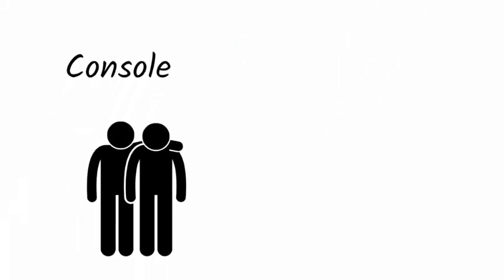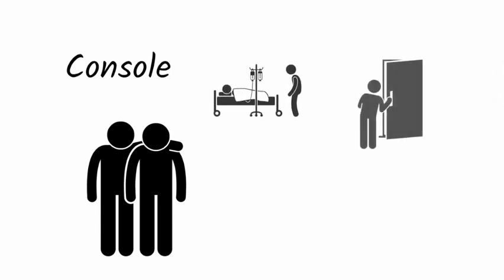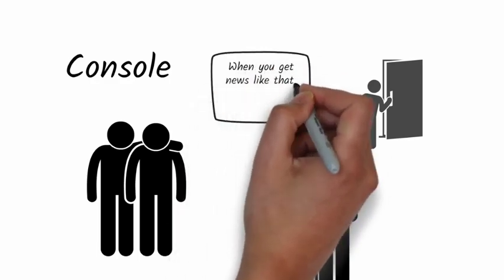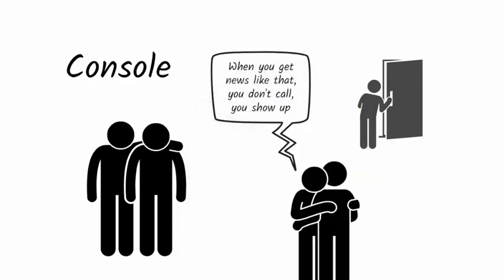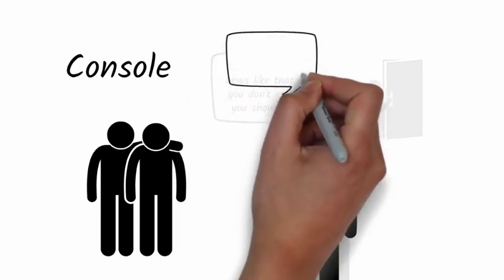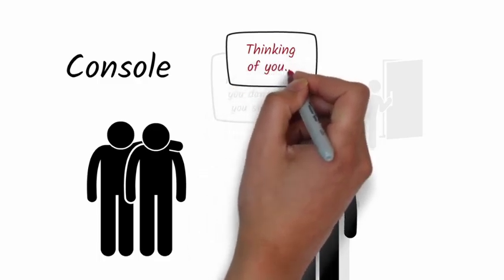And number three, console a grieving friend by showing up. When something horrible happened to one of Itzler's children, his friend showed up at his door and gave him a hug and said, when you get news like that, you don't call. You show up. When showing up isn't an option, let a friend know that you're thinking of them and check back in regularly.